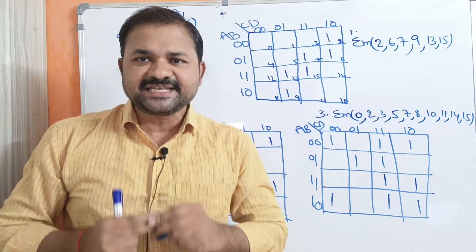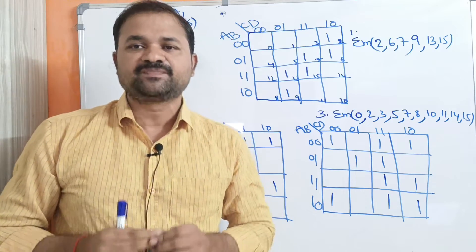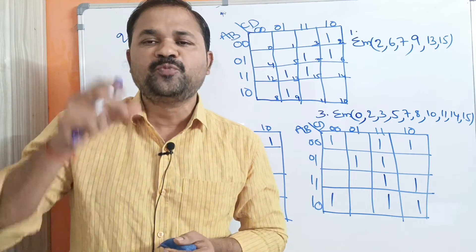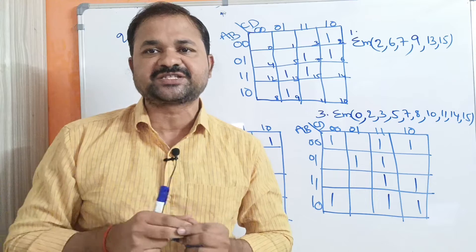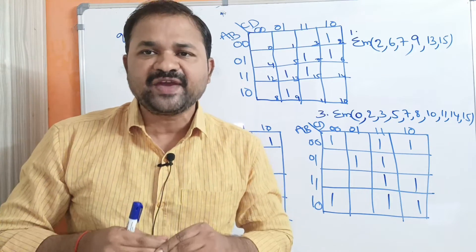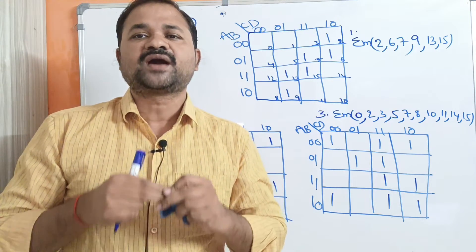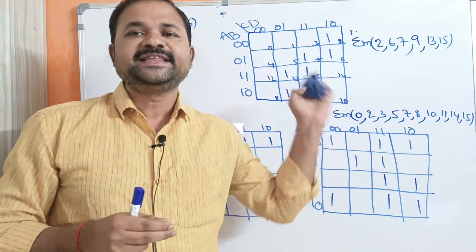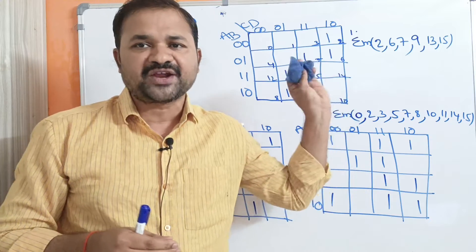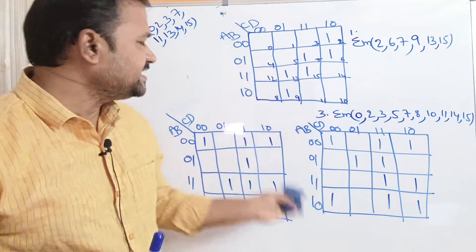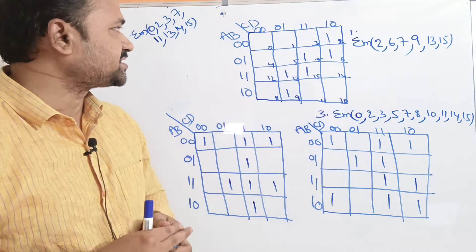Now let us discuss simplification of boolean expressions using a four-variable Karnaugh map. In this video we are going to discuss three examples.